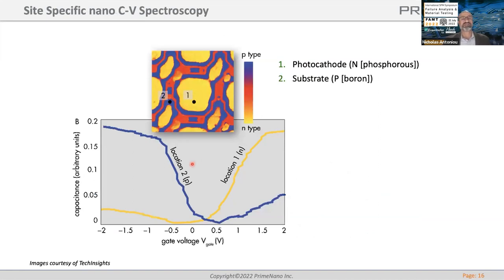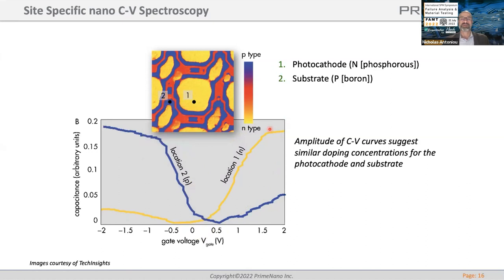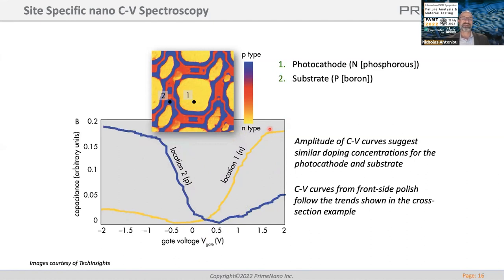Here's an image sensor that has been exposed, showing different dopant types via dCdV imaging. The phase of the dCdV tells us the polarity — red being n-type and blue being p-type. We can place the probe at a single position and do CV there. Location one shows the CV curve for that particular spot, and location two shows the p-type CV curve. That is the photocathode area of the CV curves.